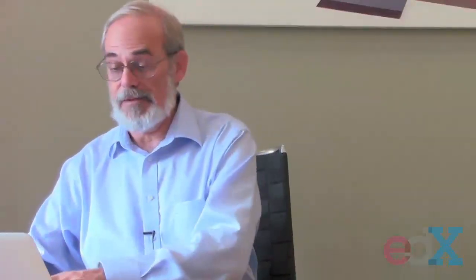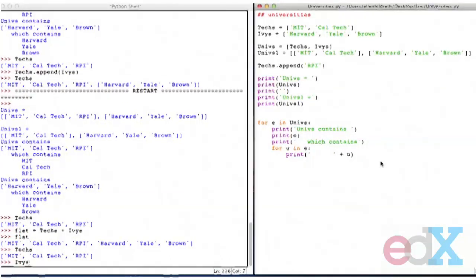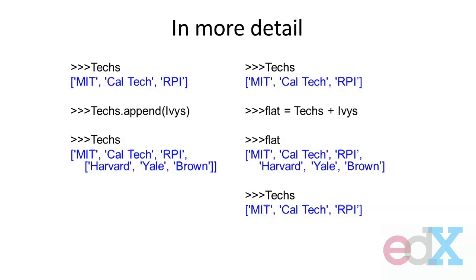Notice that concatenation creates a new list. To see that, let's look at what happened with `techs` — it has not changed, and neither has `ivs`. That's actually important. In the case of `append`, I am mutating — I'm changing one of the lists. In the case of concatenation, I'm creating a new version of those lists — literally creating a copy of it, then adding a copy of the second list to it as well. This allows me to separate out different ways of thinking about how I might want to manipulate lists. I can mutate when I need to, but I might want to just make copies when I need to, and I can do that.